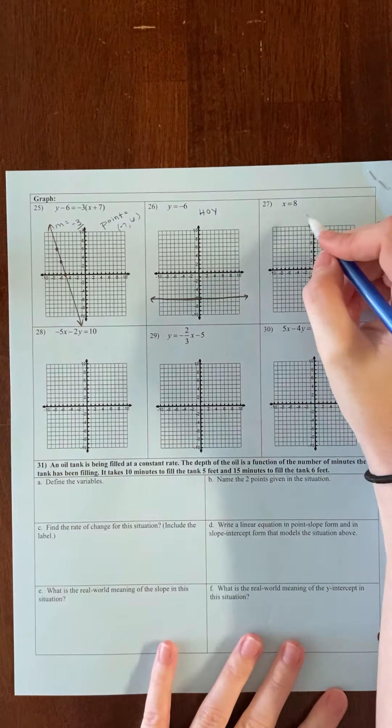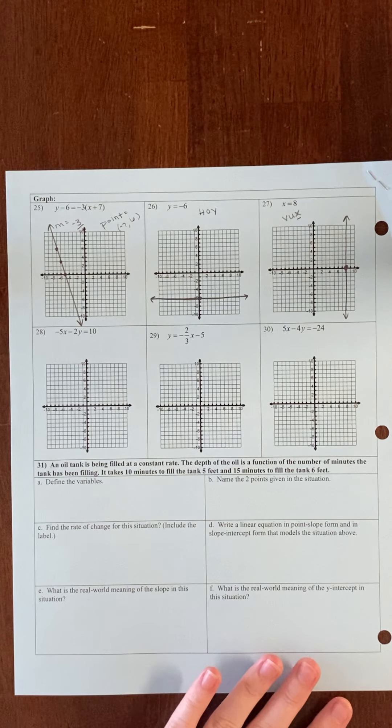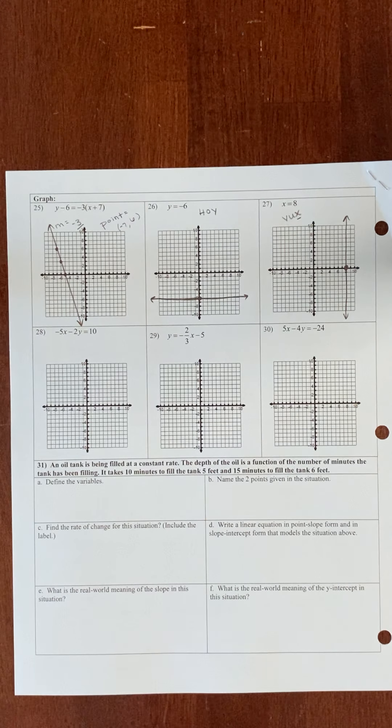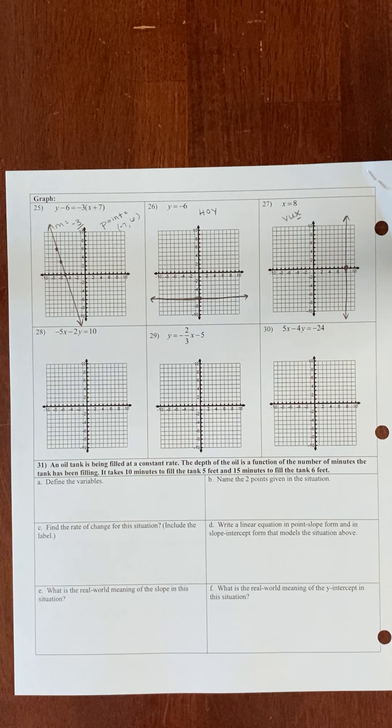Here we're going to be graphing our lines. At number 25, we see that this equation is in point-slope form, which means I know the slope and I know a point on the line just from looking at it. The slope is negative 3 because it's always just the number right in front of the parentheses. The point, however, you have to remember that it's opposite of how it looks in the equation. So if this is a positive 7 here, it's a negative 7 in my point. And if this is a negative 6 in the equation, it's a positive 6 in my point.